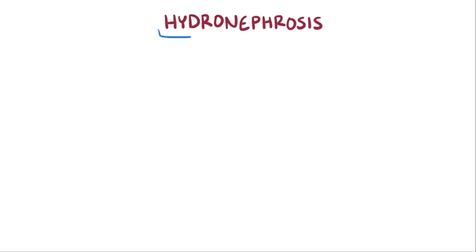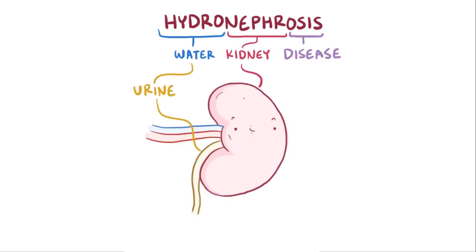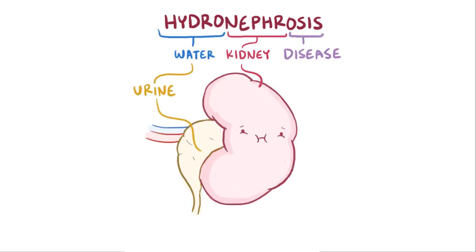With hydronephrosis, hydro means water, nephro means kidneys, and osis refers to a disease state. So hydronephrosis refers to a disease or condition where excessive amounts of water in the form of urine causes the kidneys to dilate.